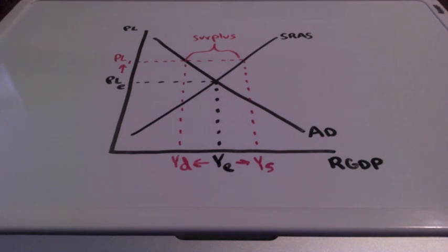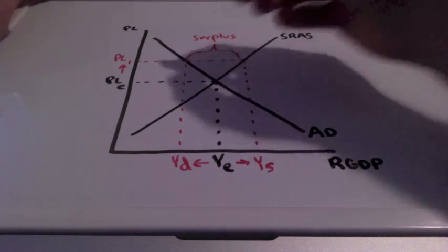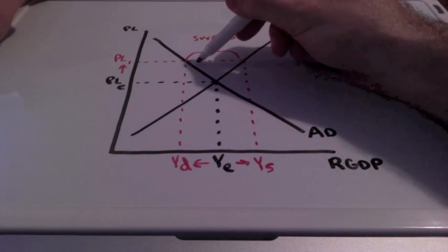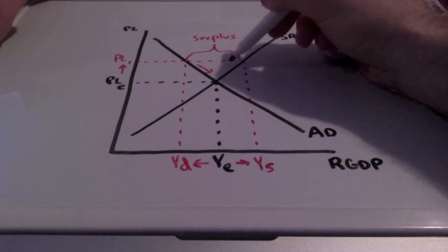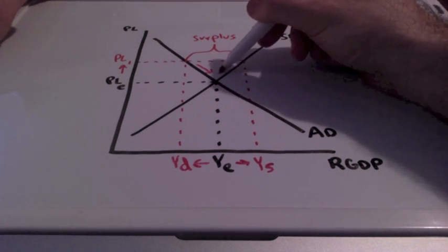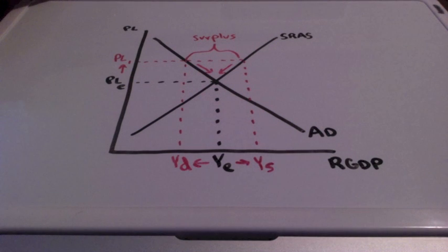To reduce inventories, firms will have to cut prices and outputs, which will result in gradually moving back to our starting point, our equilibrium point.